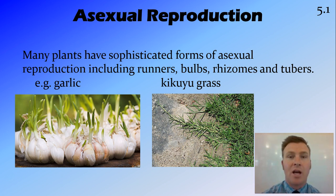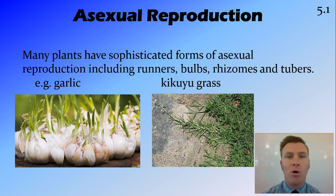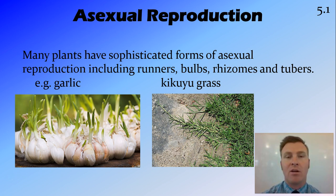Rhizomes are root systems below the ground. Similar to runners, they are roots below the ground that can pop up and produce their own organisms when separated from the main one. And tubers, such as potatoes, are similar to rhizomes — somewhere between rhizomes and bulbs — in that they are a thickened part of the root that can send off extra shoots, creating more organisms.